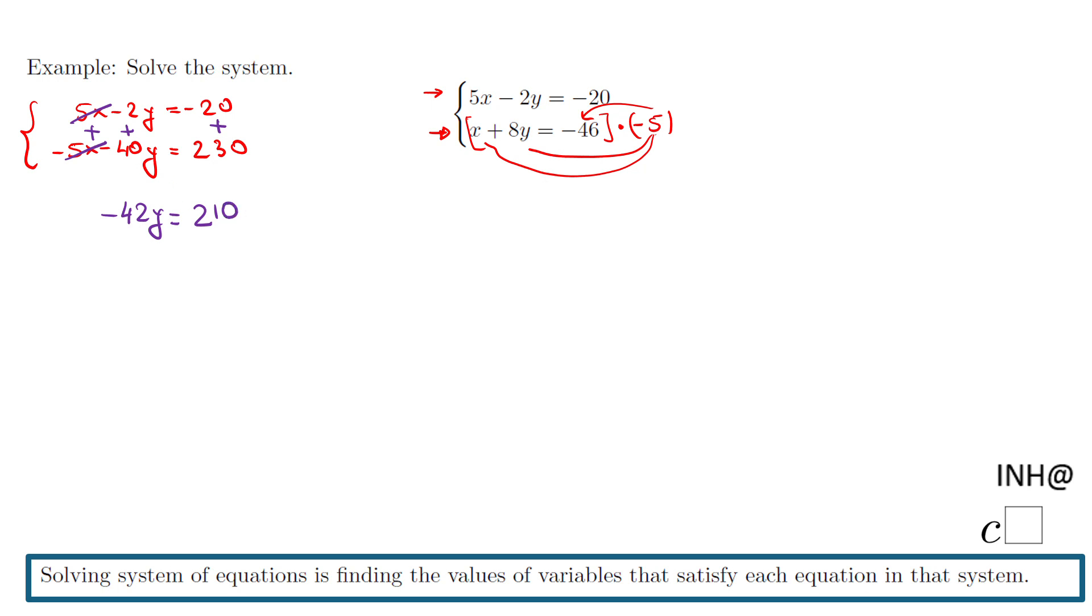And now how do we find y? We just divide by negative 42 to get rid of this negative 42. And we have y equals negative 5. So this is the y value.